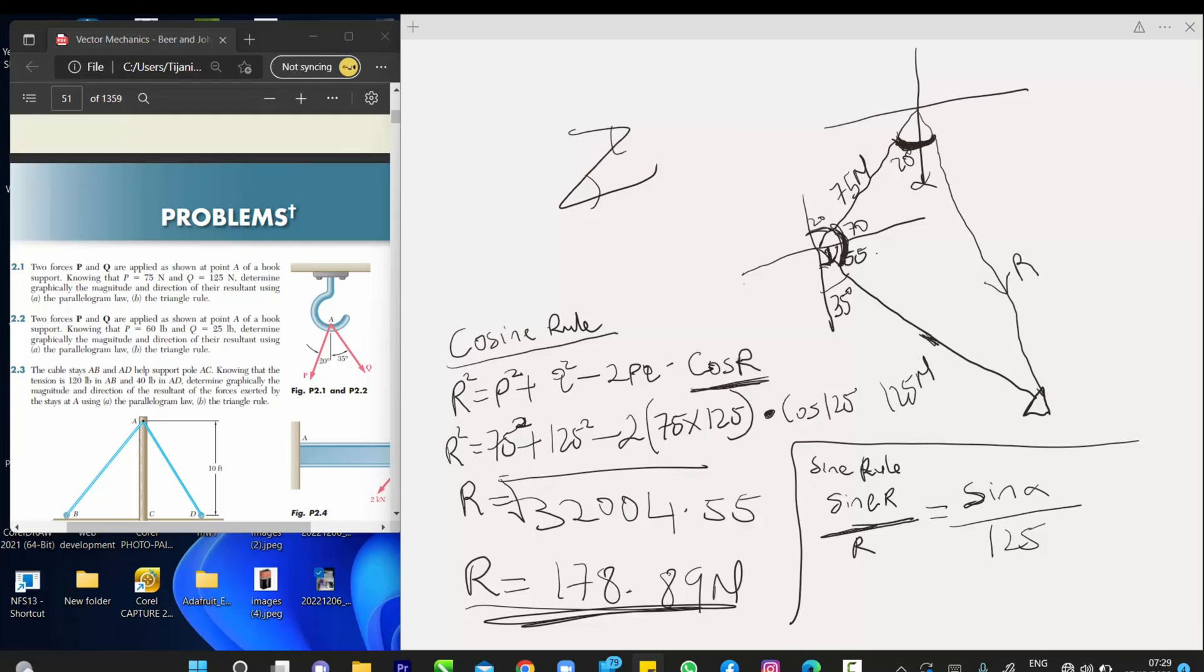So, substituting the value of R, we now have R to be 178.89, then about sine R, you sine 125. So, we have to write this again, so, sine 125 over this.